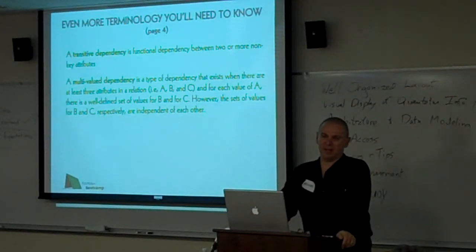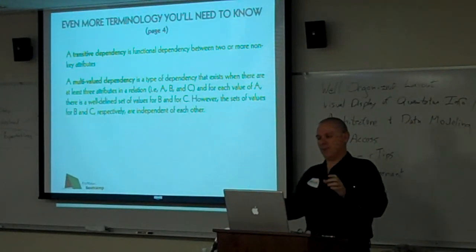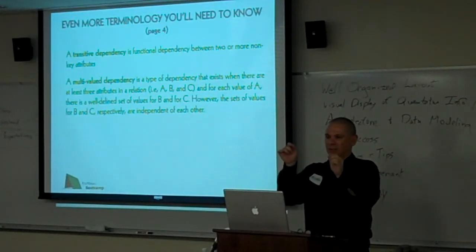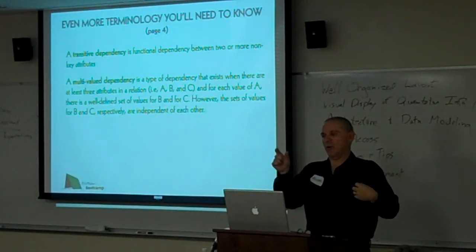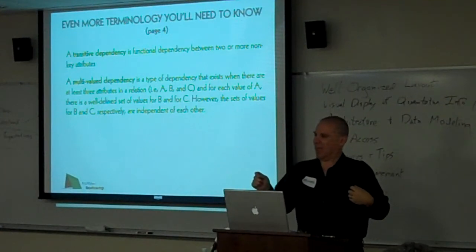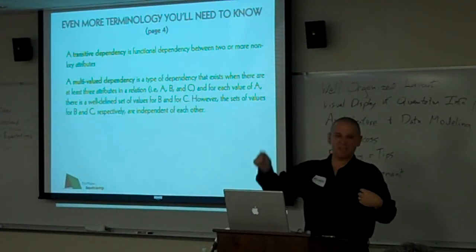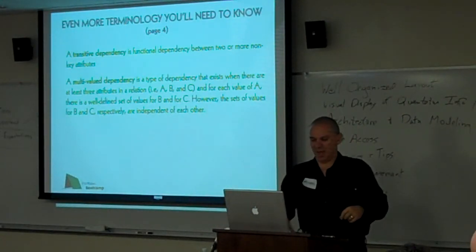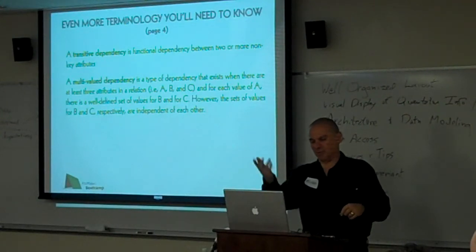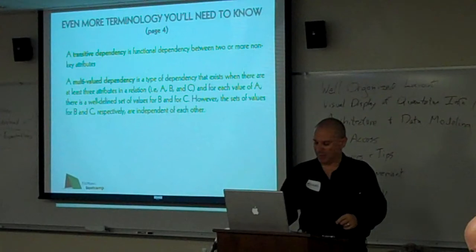These are more often used in the more advanced normal forms. Transitive dependency is when you have that same kind of dependency but the two attributes are not keys. For example, a zip code is not the key but the zip code points to the city, state, county, etc. And then you have multi-value dependency, which I think it would be easier to show you than explain.